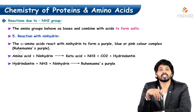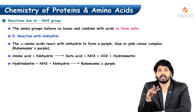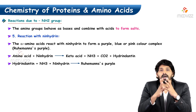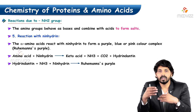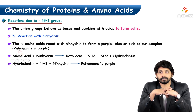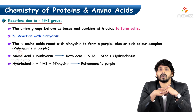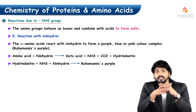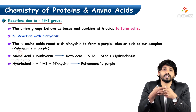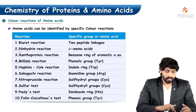First to discuss is the reaction with ninhydrin. There are two types of amino acids: alpha amino acids and other amino acids. Alpha amino acids react with ninhydrin reagent to form a purple or pink complex called Ruhemann's purple. Amino acids reacting with ninhydrin form a keto acid, ammonia, CO2, and hydrindantin. The hydrindantin then reacts again with ninhydrin to form Ruhemann's purple.